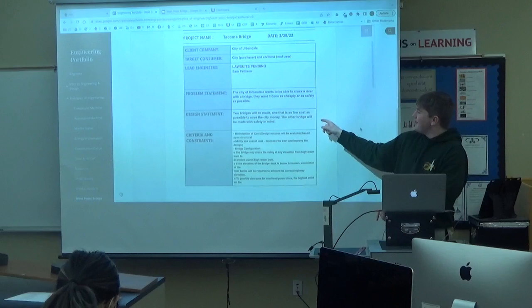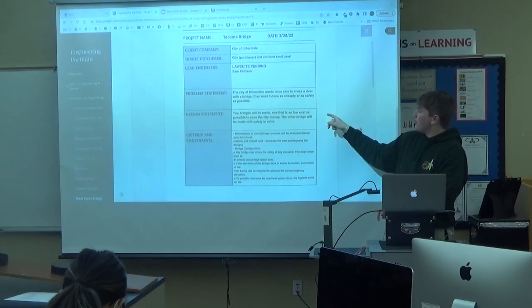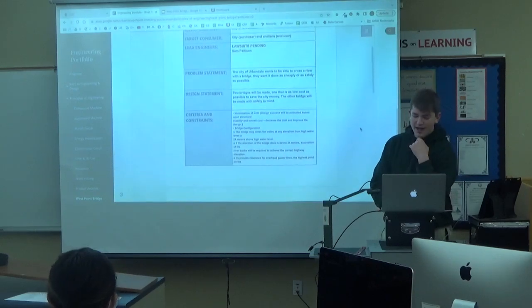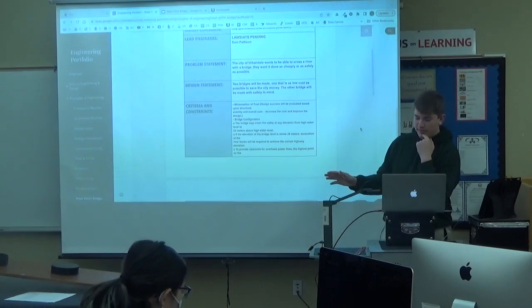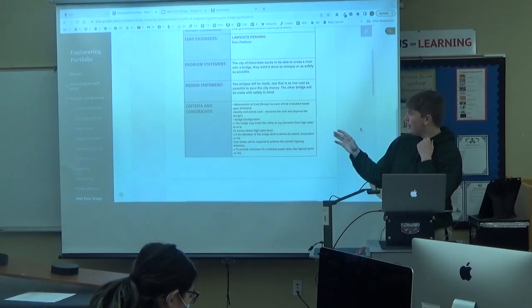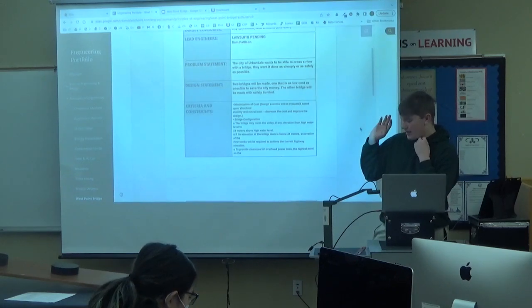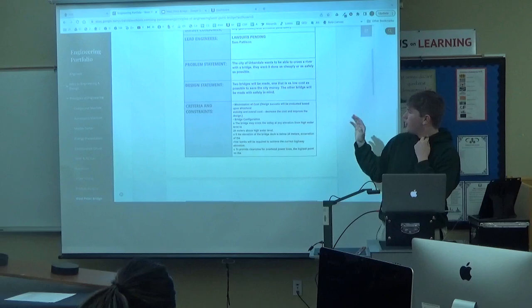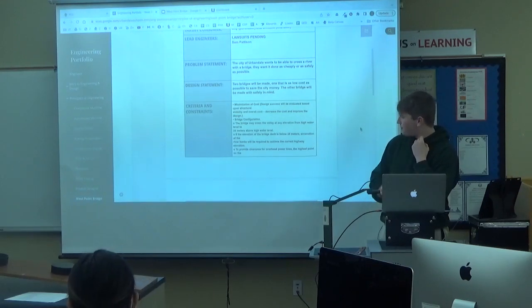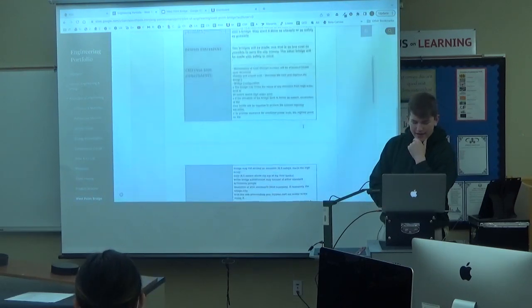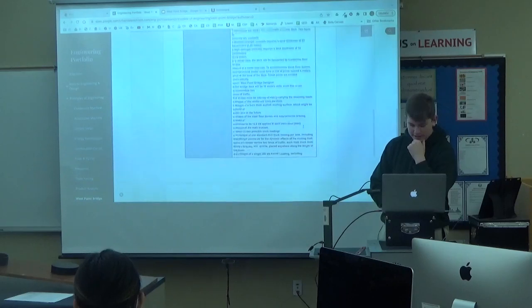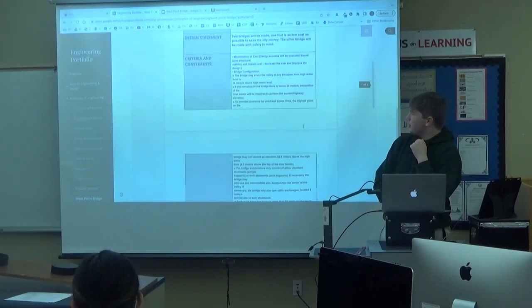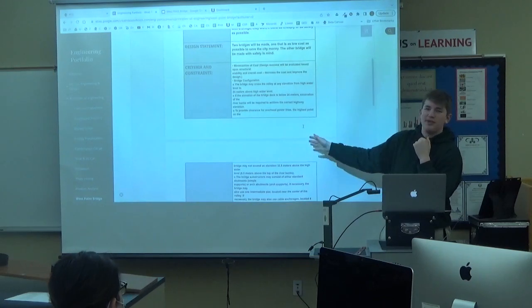The problem statement is the city of Urbandale wants to cross a river with a bridge. They want it done as cheaply or as safely as possible. So two bridges will be made, one that costs as low cost as possible to save the city money, and the other will be made with safety in mind. And here's the criteria and constraints. There's a lot, but basically it sums up to just be super cheap.